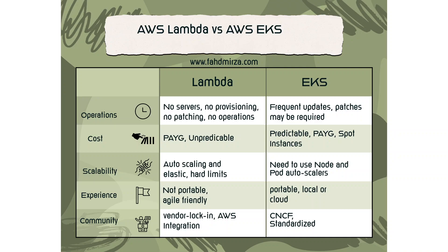You have written your application and now you want to run it in the AWS cloud. There are many options to run an application in AWS, but let's suppose you are torn between serverless AWS Lambda and managed Kubernetes AWS EKS service. So how do you select which one to use for your application? The EKS versus Lambda choice is easy to make if you understand the following differences, so let's go through them one by one.